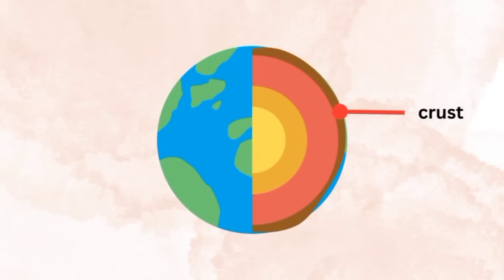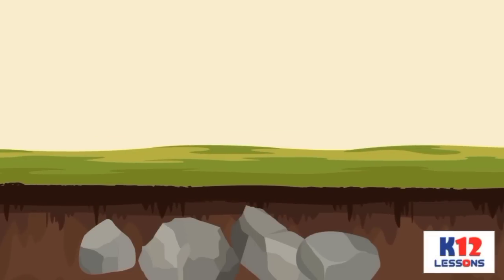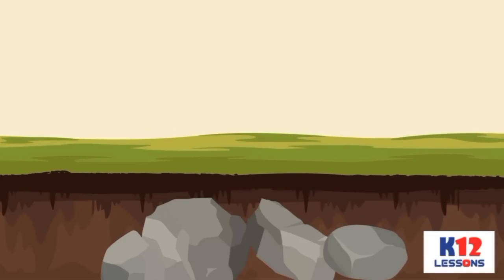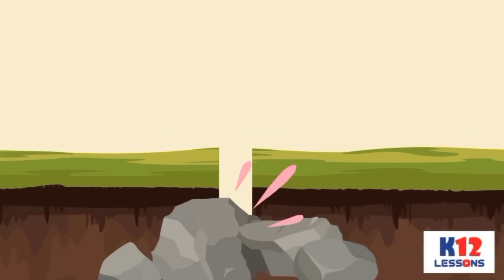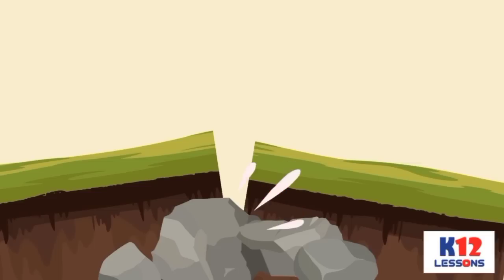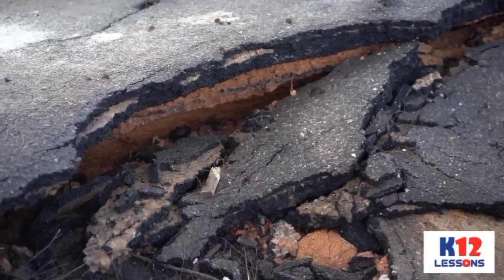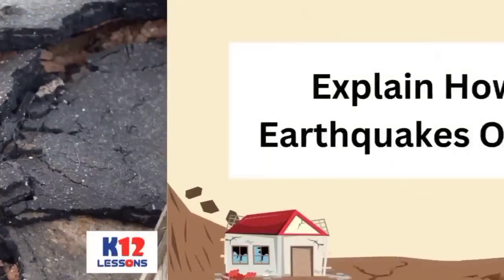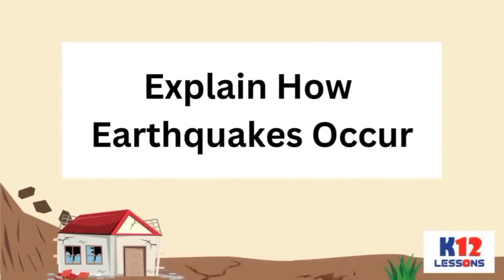The crust of the Earth is always moving. The sudden movement of the Earth's crust can cause masses of rocks to change position and release a large amount of energy that can cause earthquakes. Earthquakes can bring changes to the surface of the Earth. After going through this lesson, you are expected to explain how earthquakes occur.